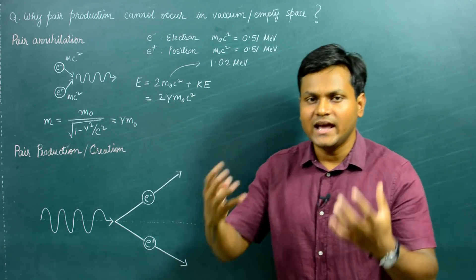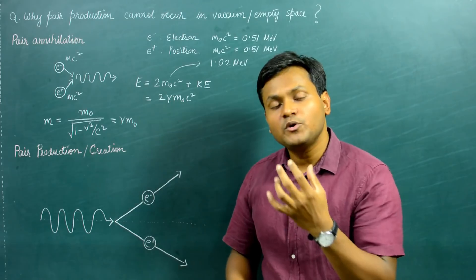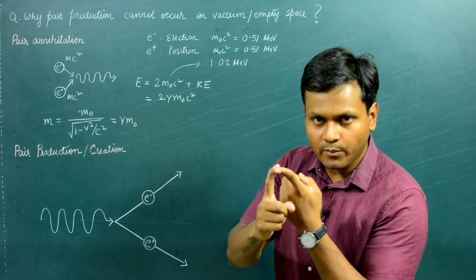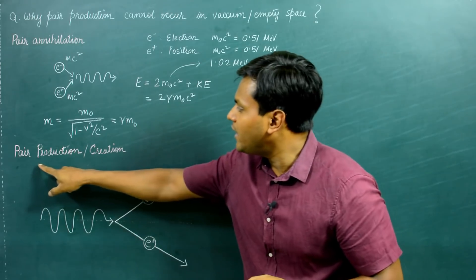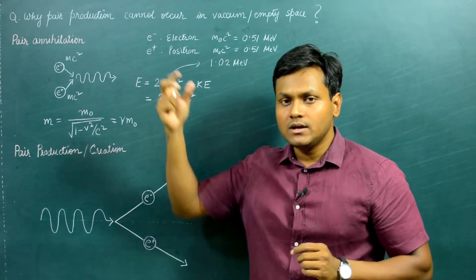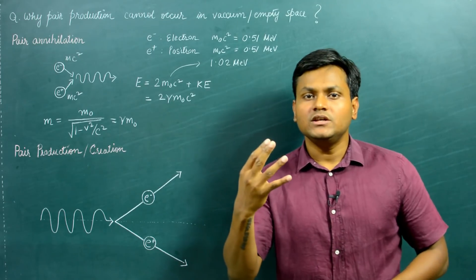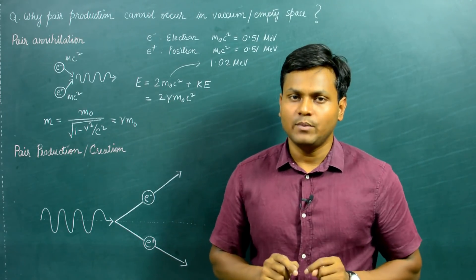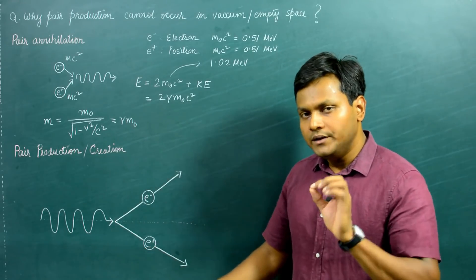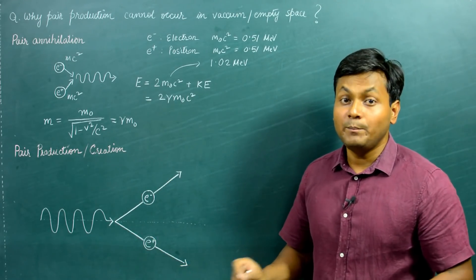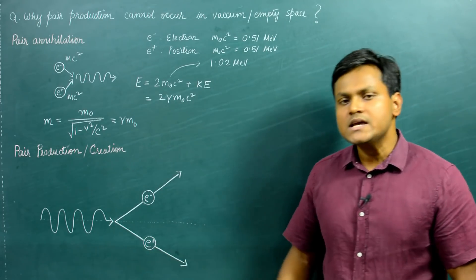This is pair annihilation: when an electron and a positron come together, they annihilate and lead to the creation of pure energy resulting from their rest mass energies and initial kinetic energies. The opposite phenomenon is also possible, known as pair creation or pair production. In pair production, energy — if it is sufficient — can lead to the creation of a particle-antiparticle pair. The excess energy goes off as kinetic energy of the particles.